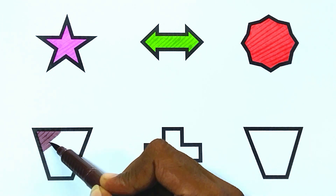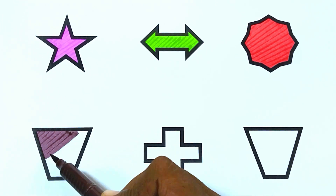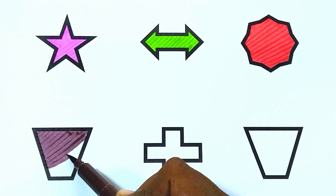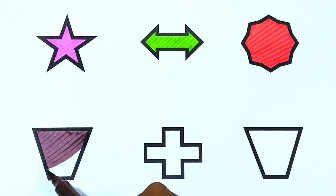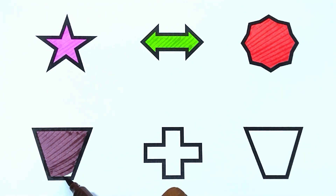Brown color, trapezoid. The shape is brown color, trapezoid.